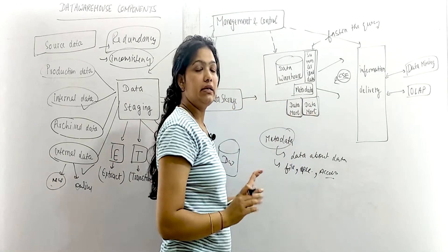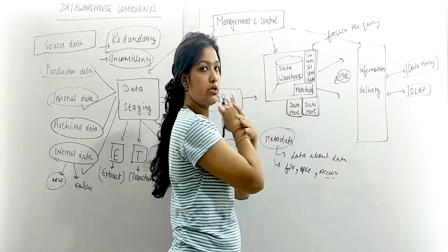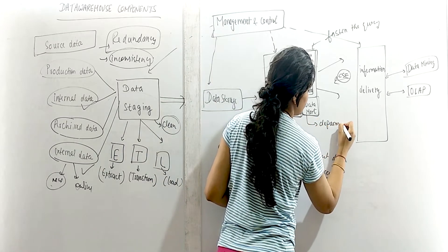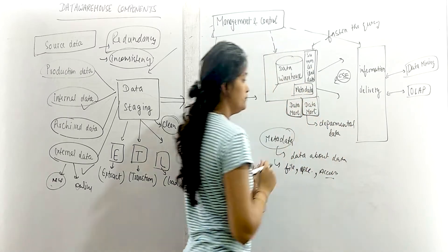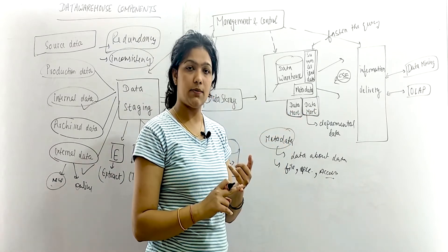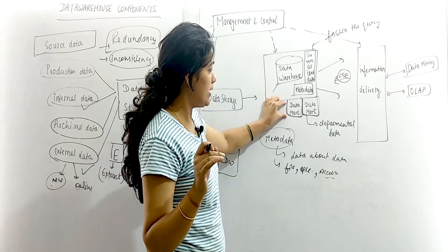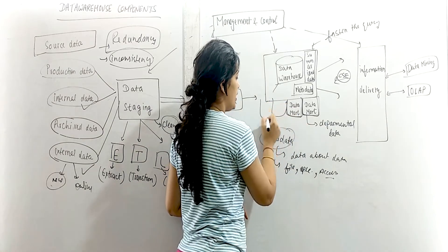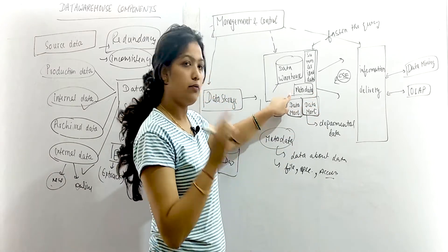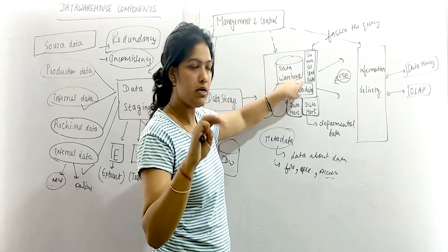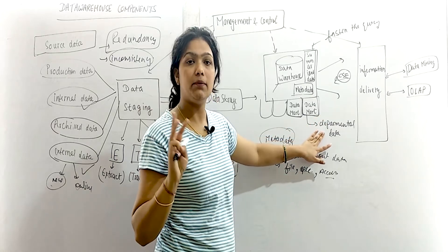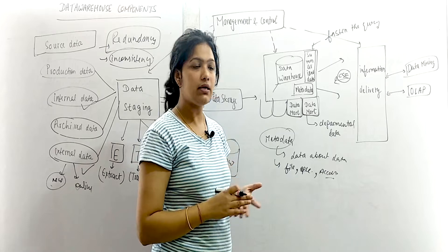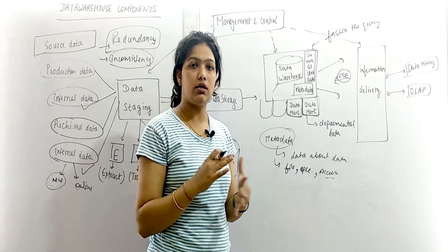Now data mart — this is a very important thing. While the data warehouse contains the entire data, a data mart contains department-wise data. For example, if there are five departments — CSE, EC, Civil, Mechanical, Electrical — then one data mart will have data about CSE, one about Electrical, one about Civil, one about Mechanical. Metadata will be only one, the data warehouse will be only one, but data marts can be many because data mart is basically departmental-wise data storage.